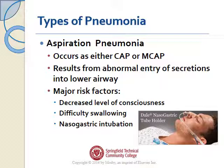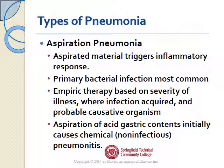Aspiration pneumonia can occur either in the community or as a medical care acquired pneumonia, and it results specifically from abnormal entry of secretions into the lower airway. Major risk factors include decreased level of consciousness — awake, alert people typically don't have issues breathing in their own secretions — difficulty swallowing, such as patients who've had a stroke or have dysphagia, and nasogastric intubation, which can be a track for bacteria and may increase the risk of aspiration pneumonia, especially if the tube is malpositioned.